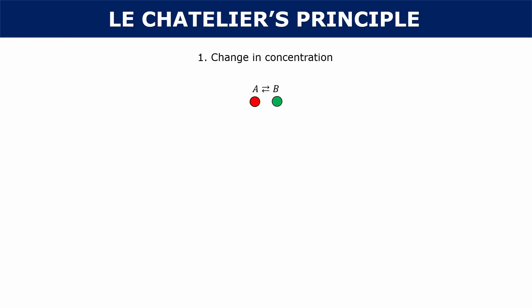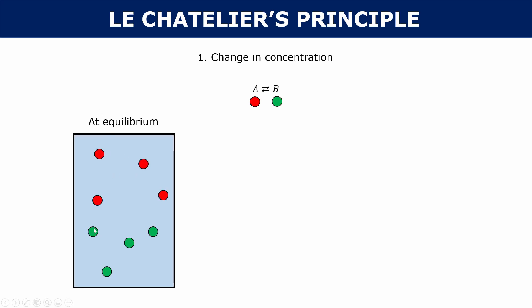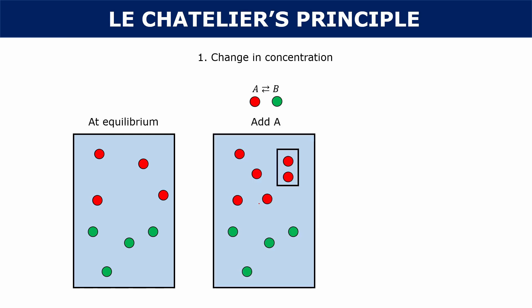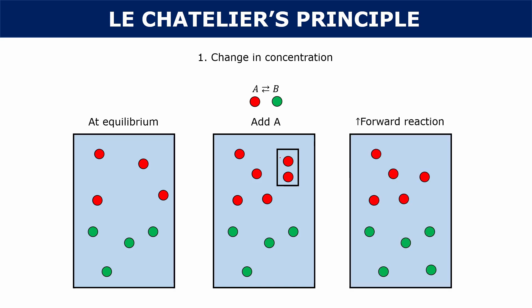Let's start with concentration. You have a reaction where A is in equilibrium with B, and at equilibrium your reaction looks like this — four A molecules and four B molecules. Let's say I add a stress: I add two A molecules. How is the system going to react? Well, the system asks itself: I've gained more A, how do I get rid of some of this extra reactant? You increase your forward reaction, so the system will take one of your A molecules and turn it into a B molecule.